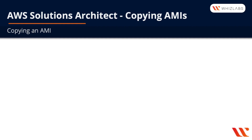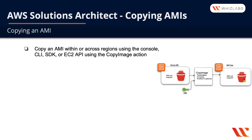In this module we're going to talk about copying AMIs. We're going to go over copying AMIs across regions, across accounts, and copying AMIs in general. You can copy an AMI or an Amazon Machine Image within or across regions and across accounts. You can do this using the console, the command line interface or CLI, any of the software development kits or SDKs, or the EC2 API using the copy image action as shown in our diagram.